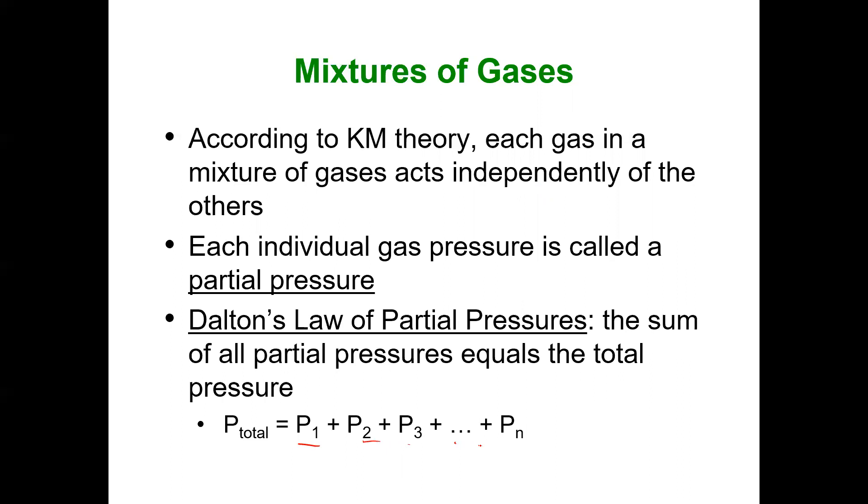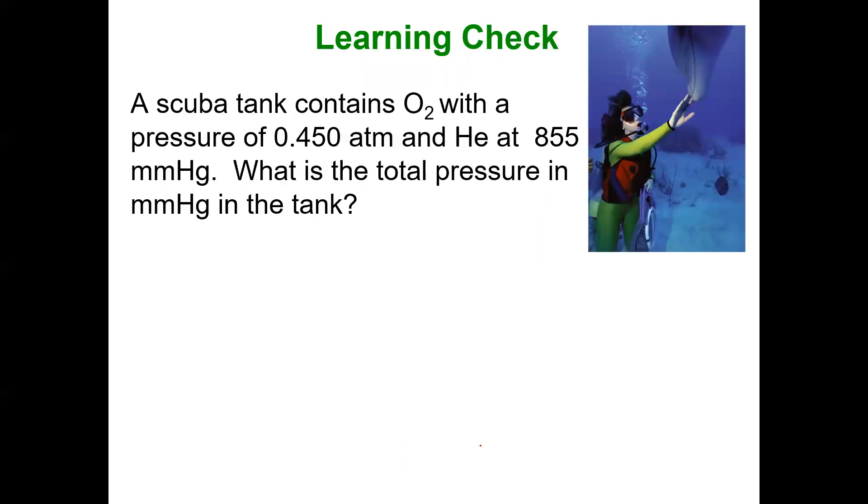An example problem: a scuba tank contains oxygen with a pressure of 0.450 atmospheres and helium at 855 millimeters of mercury. What is the total pressure in millimeters of mercury in the tank? My total pressure is going to be proportional to the number of collisions, and the collisions are proportional to the pressure of the individual collisions of each gas. So the pressure of the oxygen gas plus the pressure of the helium gas.